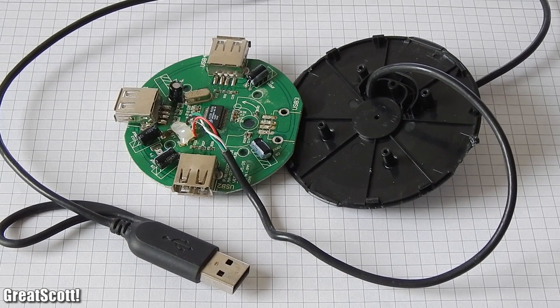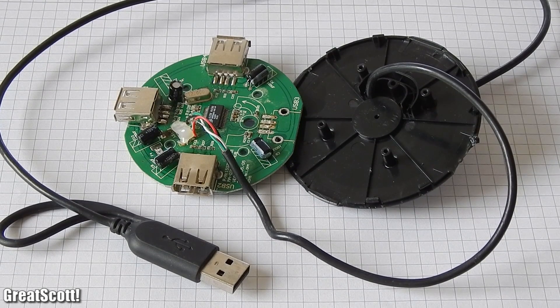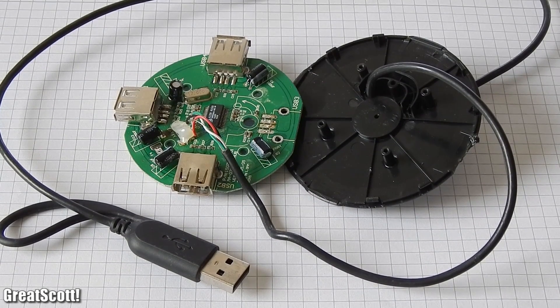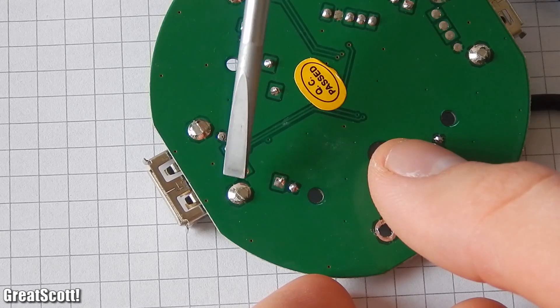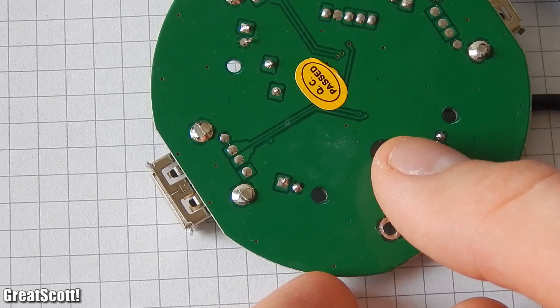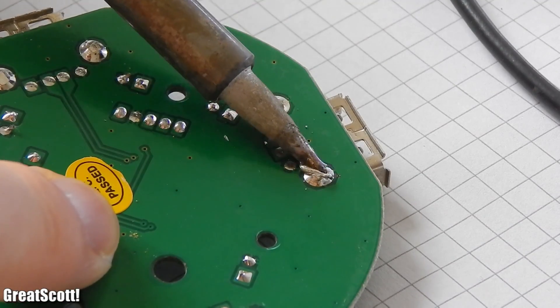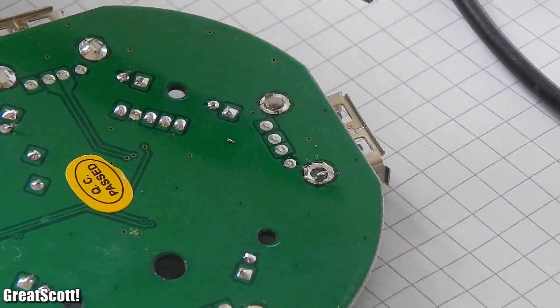First of all we're going to need a USB port. I desoldered one from this old USB hub I had laying around. Just desolder the four pins on the front, and afterwards the two pins on the back which hold the port in place. You have to use some force to get it out, but eventually you'll make it.